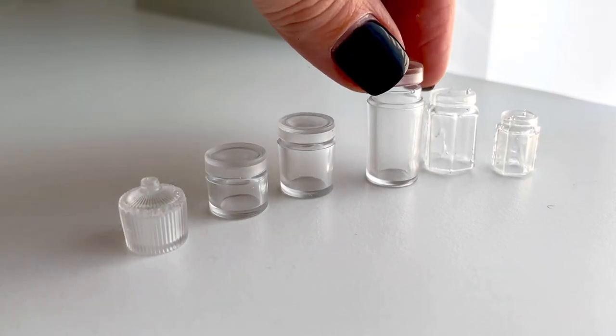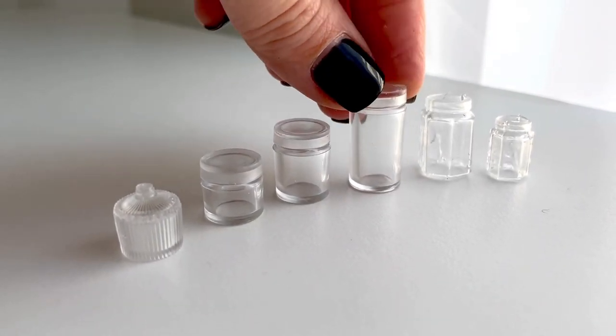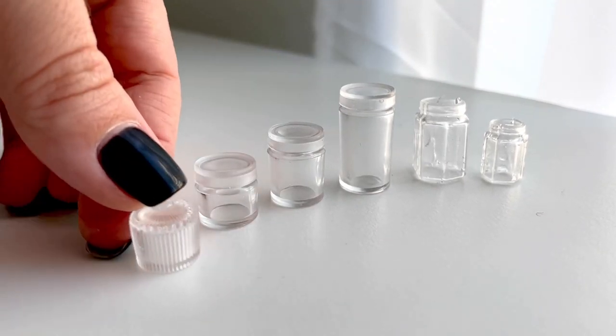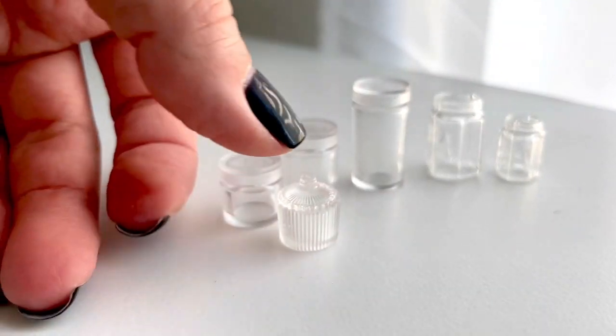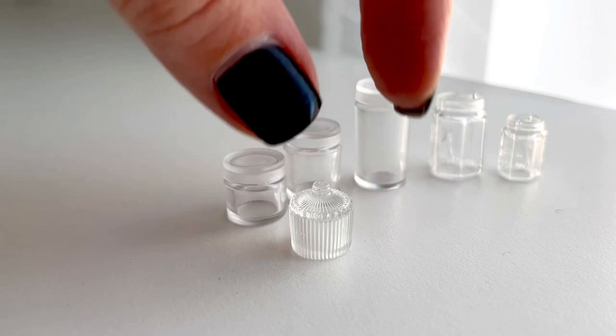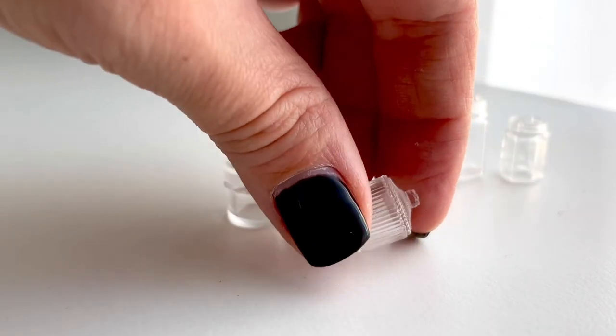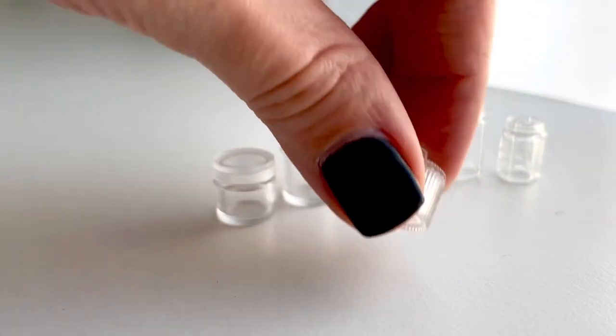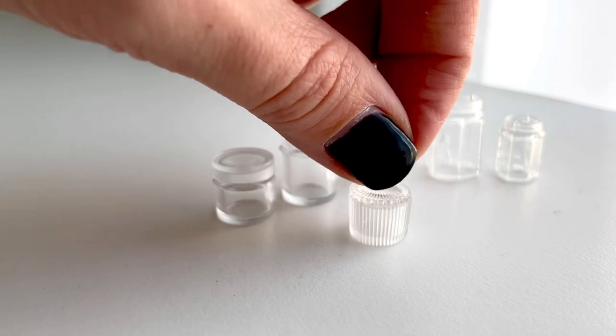Those are the types of molds that I'm going to buy from now on. I'm also really happy with how this small one with a lot of detail and the ridges on the sides turned out. It did have a couple air bubbles but it's not noticeable with the ridges on the side.